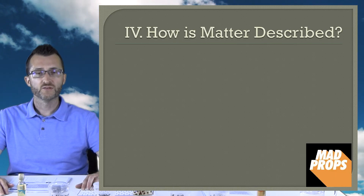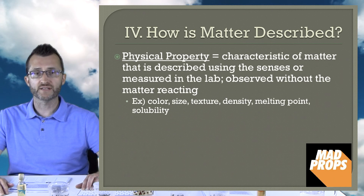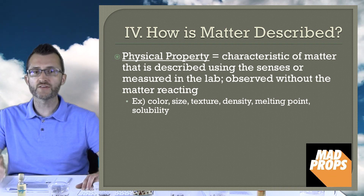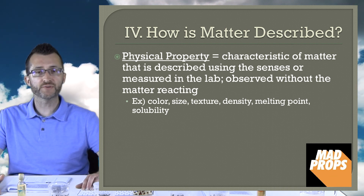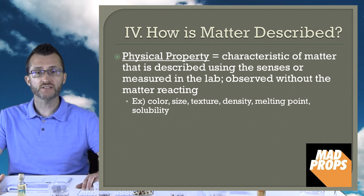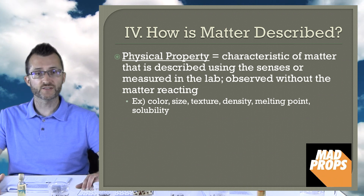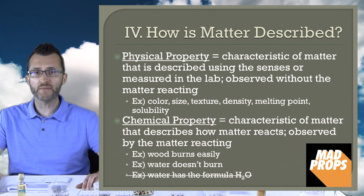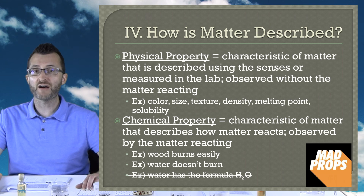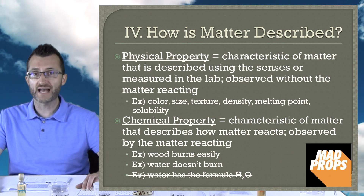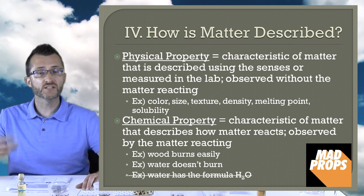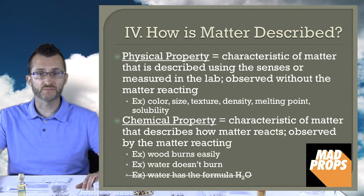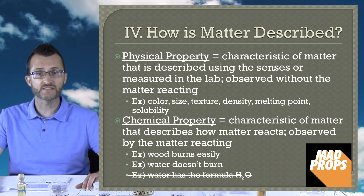How is matter described? We can describe matter using a physical property, which is a characteristic of matter described using the senses or measured in the lab. It's observed without the matter actually reacting. Examples include color, size, texture, density, melting point, and solubility. We can also describe matter using a chemical property, which is a characteristic that describes how matter reacts — observed by the matter actually reacting. An example would be describing wood burning easily, or describing water as not being able to burn. Even though water isn't reacting, we still consider that a chemical property.